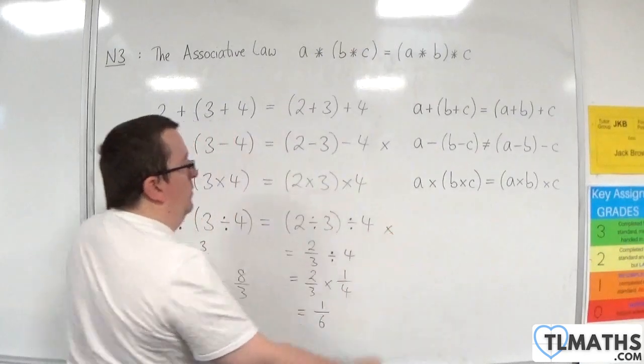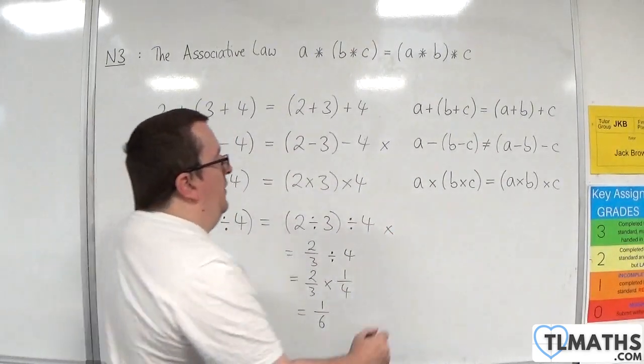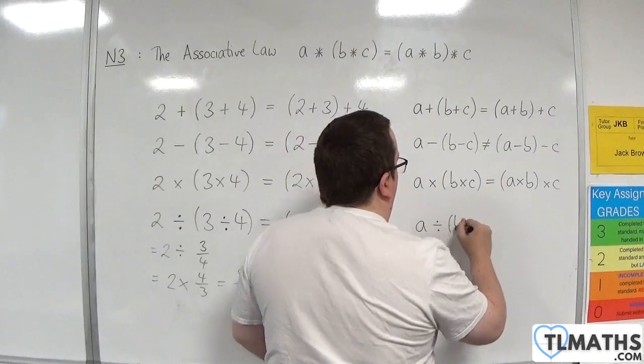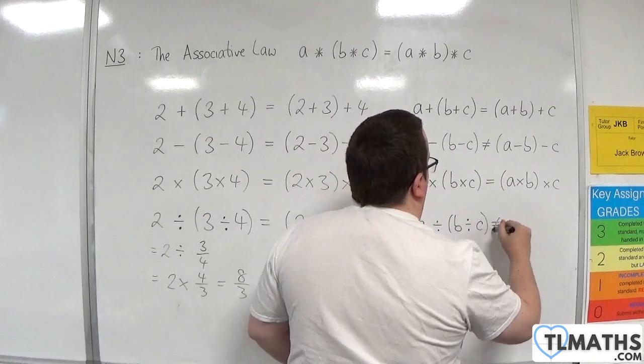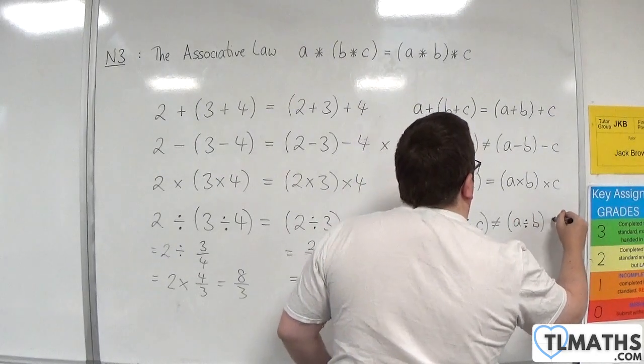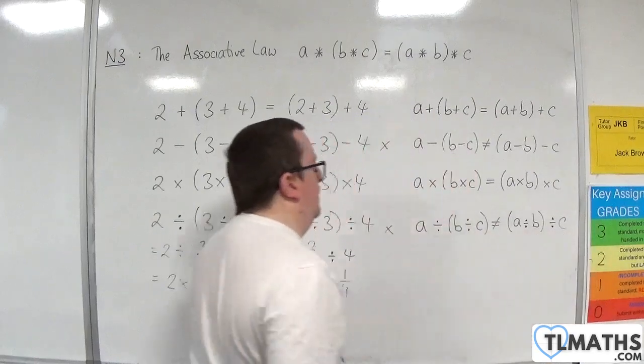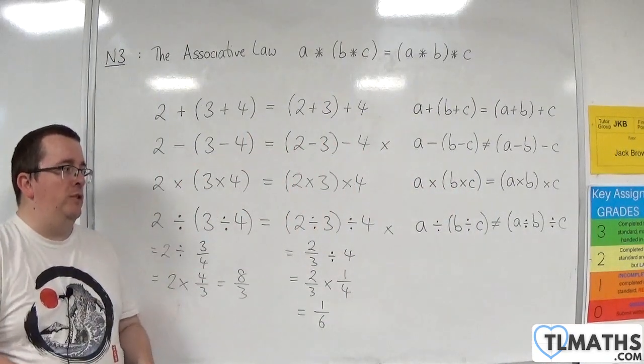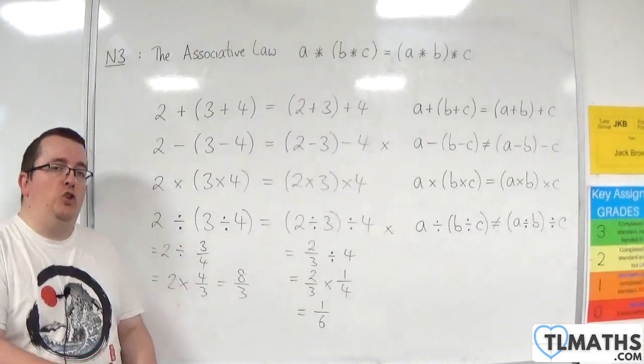So I've found an example clearly where it fails. So it is not true to say that A divided by B divided by C is equal to A divided by B divided by C. So addition and multiplication are associative, but subtraction and division are not.